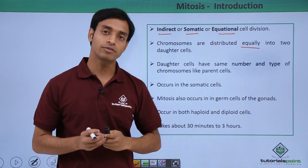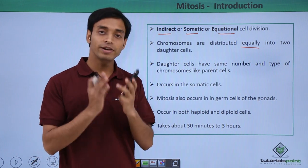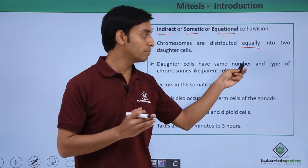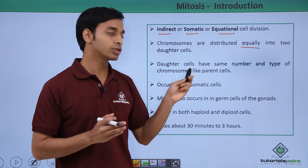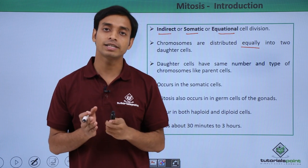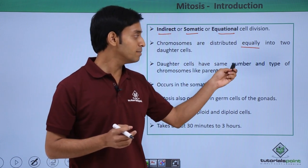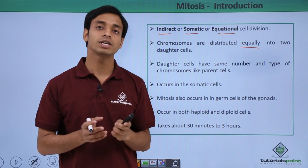Now the daughter cells that have formed, very importantly, they have the same number and the type of chromosomes like that of the parent cell. So we can say that because of the process of mitosis, clones of the parent cells are formed. So they have the same number and same type of chromosomes like that of the parent cells.